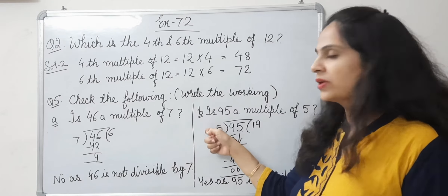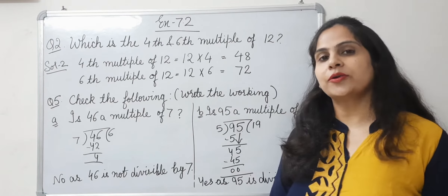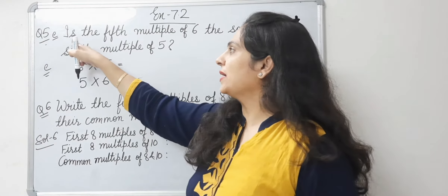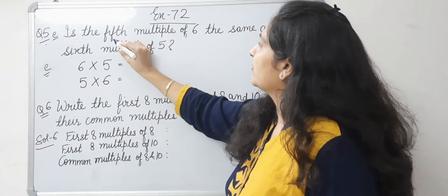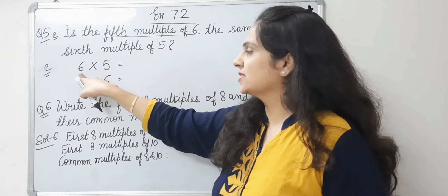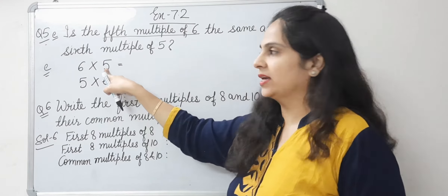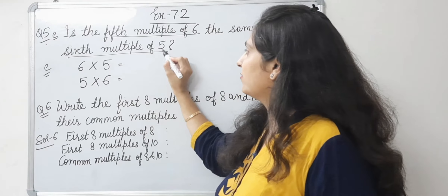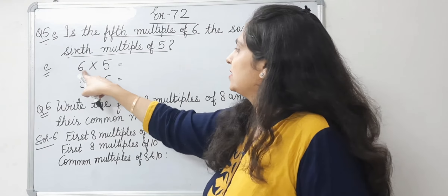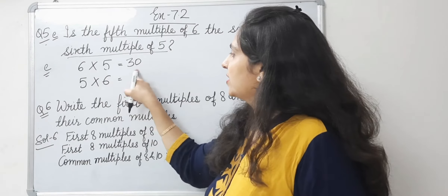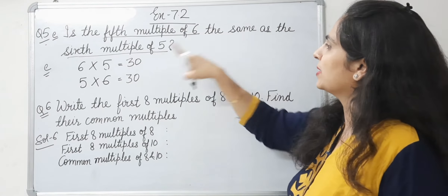Now let's do part E of question 5: is the 5th multiple of 6 the same as the 6th multiple of 5? The 5th multiple of 6 means 6 multiplied by 5. The 6th multiple of 5 means 5 multiplied by 6. 6 5s are 30, and 5 6s are 30. So the answer is yes — the 5th multiple of 6 is the same as the 6th multiple of 5.